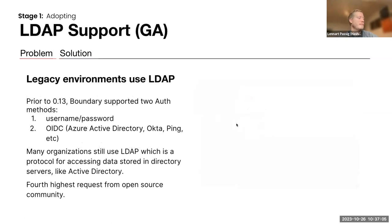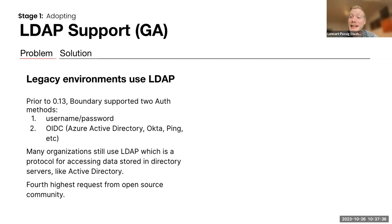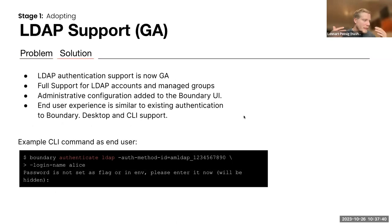The next thing released is full LDAP support. We released the beta version of LDAP in the last version, but now it is fully supported. We had legacy environments that still rely on LDAP as an authentication method for Boundary. Previously we only supported the CLI to a limited extent. Now we have full support of LDAP as an authentication method for accounts, for managed groups, for configuring this at a larger scale — not only at the CLI level, but also on the UI level, which is quite exciting.